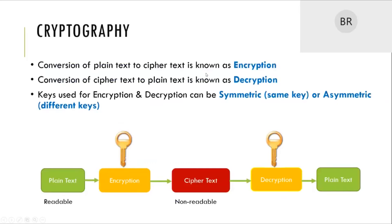In cryptography, plain text is encrypted with a key to convert it into a non-readable message, producing a ciphertext. This ciphertext can be decrypted using a key to obtain the original plain text again. If you use the same key for both encryption and decryption, it is called symmetric key cryptography — symmetric means same key. For example, if I am sending a message to you secretly, I encrypt it with a symmetric key and send it. Only you, who shares the key with me, will be able to decrypt and read it.